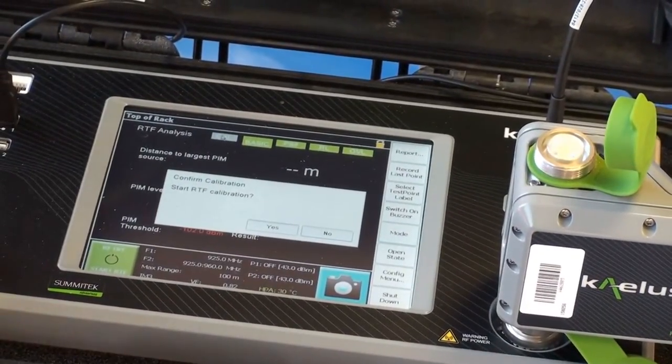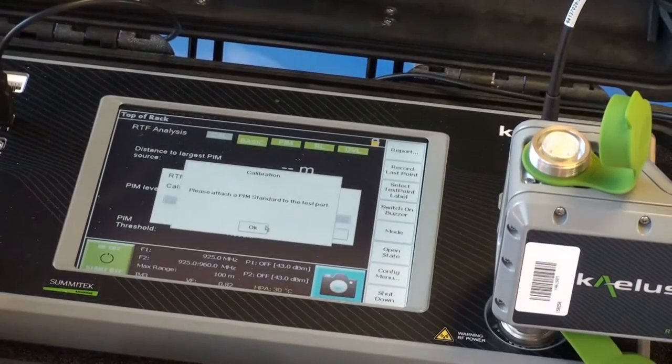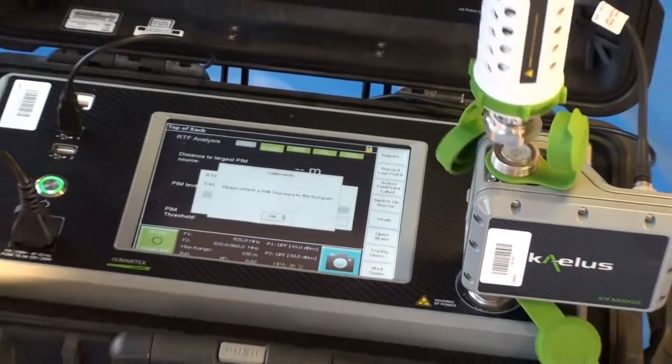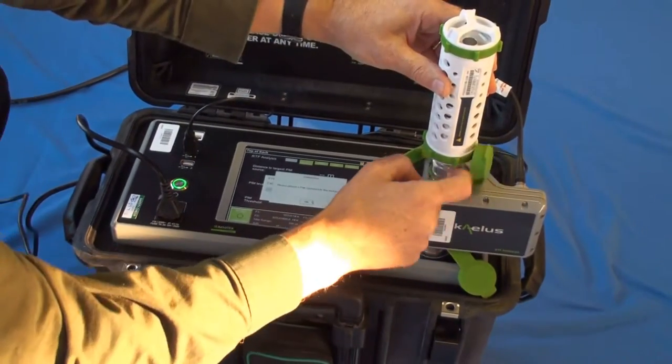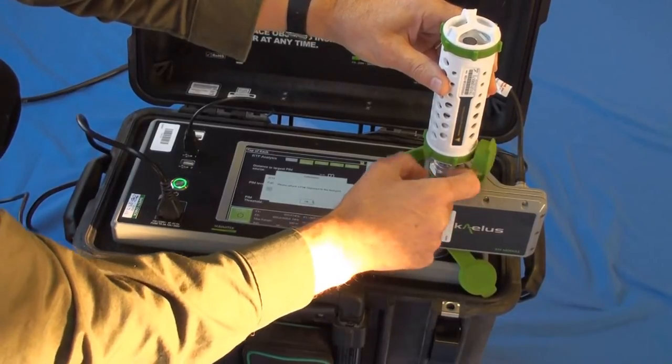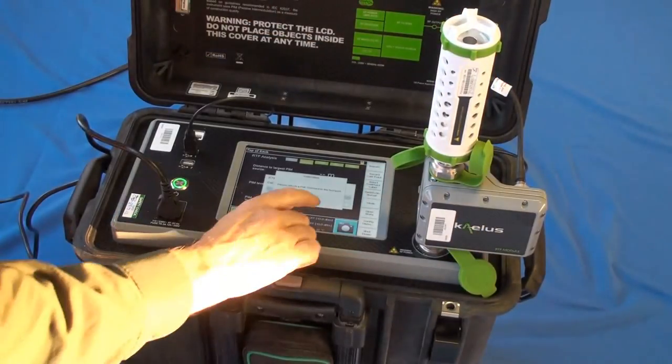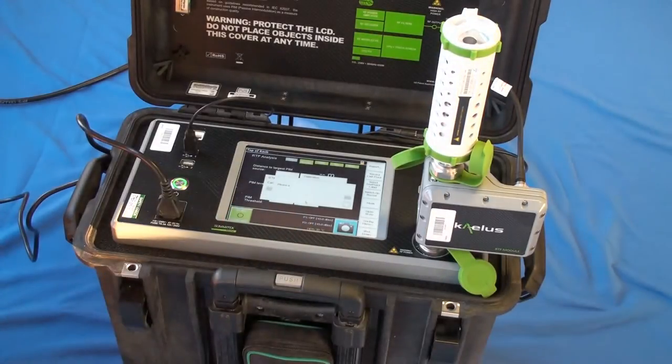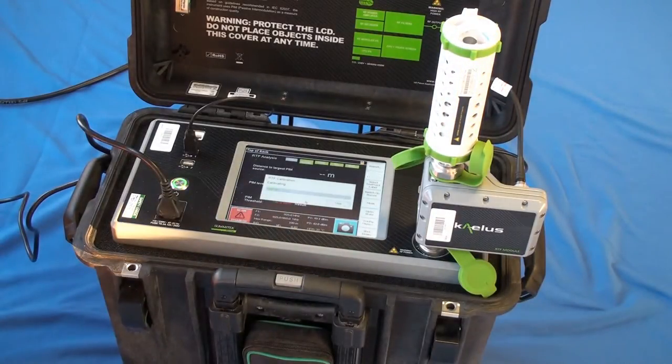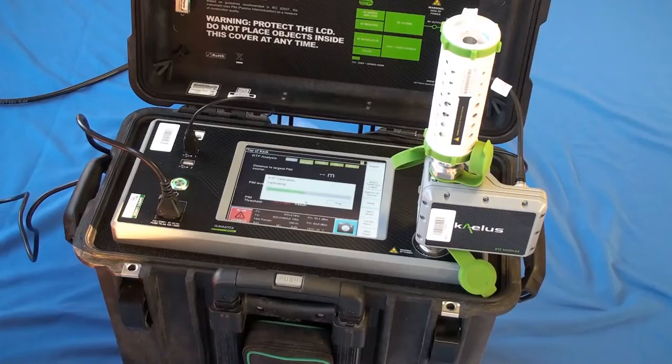And this is done simply by fitting a PIM source onto the outputs. And then calibrating. It just takes a few seconds. And that's it done.